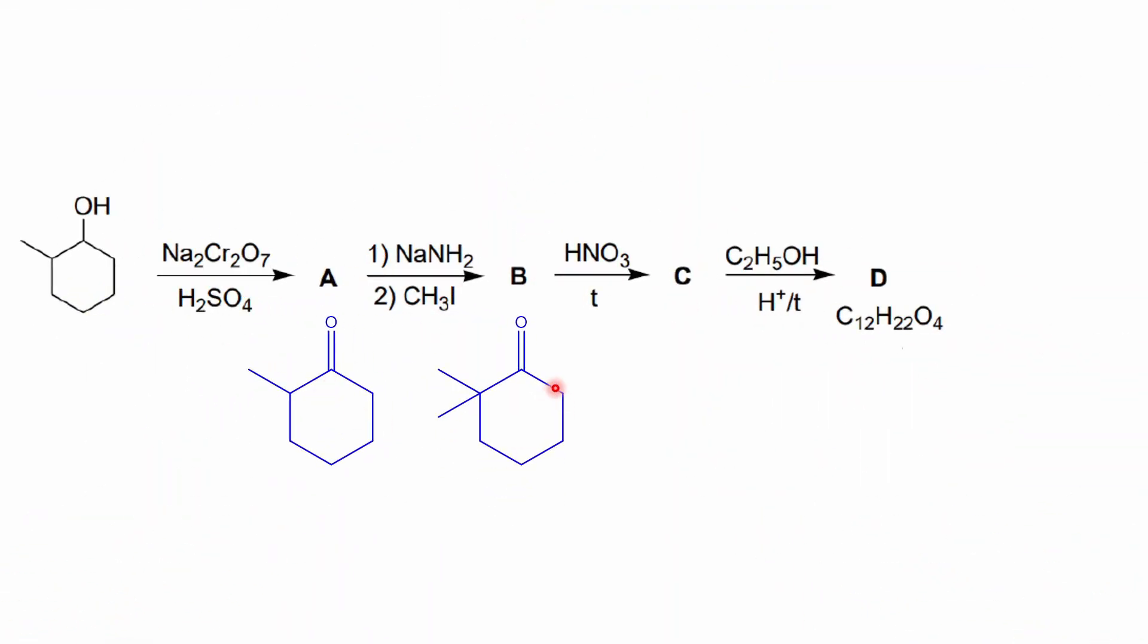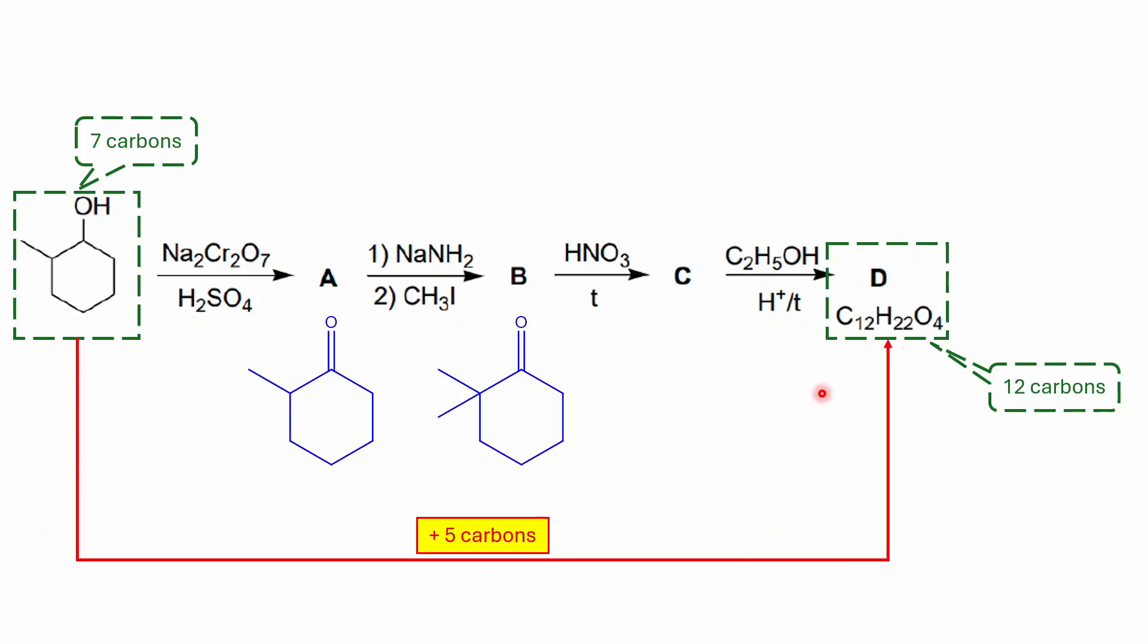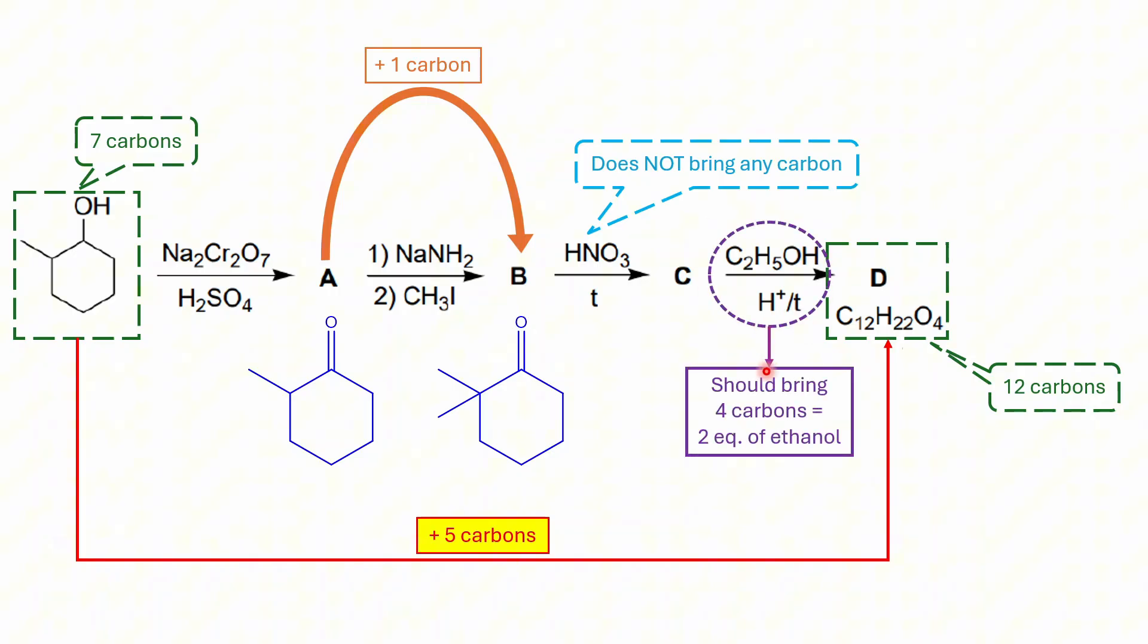And now we get our A and B. So as you can see here, this is our compound B. Now let's try to find out the structure of C and D. So let's do some counting here. This compound has seven carbon atoms. And this compound D, as you can see from molecular formula, has 12 carbon atoms. So what happens here is that you have added five carbon atoms. We already added one here by installing a methyl group here. So from B to D, we need to add four carbons, right? Because total there is a five carbon increase. And we know that this is a strong oxidizing agent. So it's not supposed to bring any carbon atom. So that leaves us with this information that from C to D, we have to have four carbon atoms. So it's like two equivalents of ethanol we are going to use. So because I see from C to D only two carbons, but from B to D, I need to add four carbons. So that means I need to have two equivalents of ethanol.